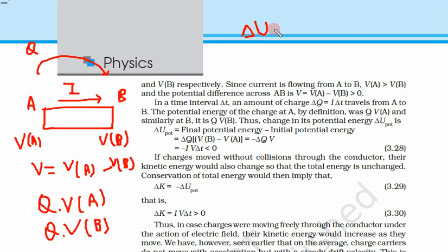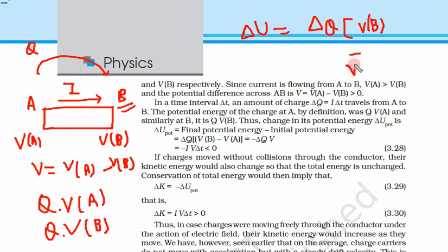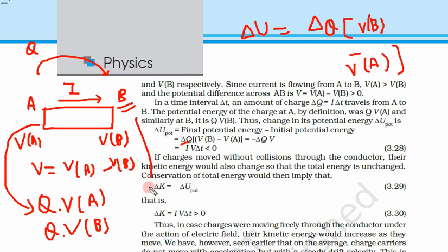The change in potential energy is: delta q of charge flowed from A to B, multiplied by the difference in potential. Final potential is Vb, initial potential is Va, so delta U = delta q · (Vb minus Va).